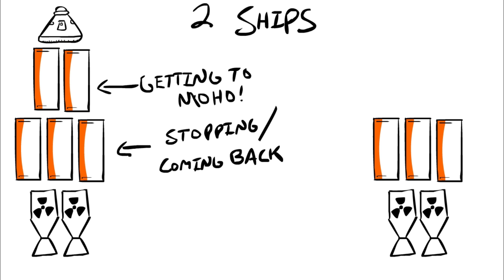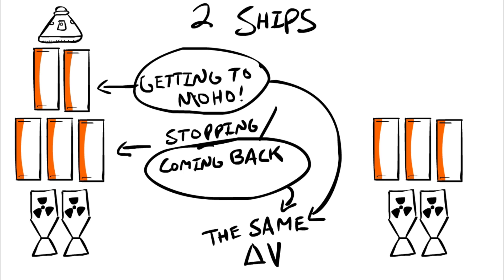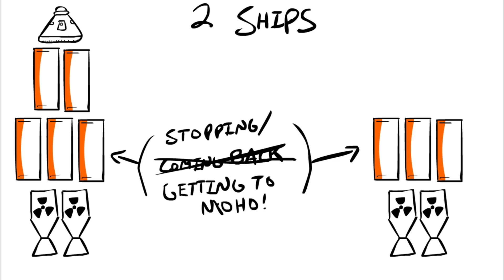As explained previously, the amount of delta-v needed to get to Moho and the amount needed to get back to Kerbin from Moho are the same. So our bottom three tanks and two nuclear engines will be used for getting to Moho and stopping. Since our lander isn't going to be returning to Kerbin...